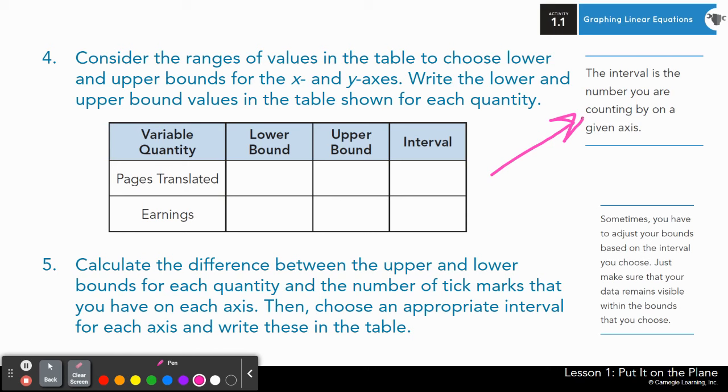Then number five says, calculate the difference between the upper and lower bounds for each quantity and the number of tick marks that you have on each axis. Then choose an appropriate interval for each axis and write these in the table. So on your own or with a partner, you're going to use the graph on the next page to determine where are my numbers going to start, our lower bound, where should my numbers end, my upper bound, and then by what interval am I counting by? Take about two minutes to see what you can fill in and then we'll fill in this table together. Pause here.